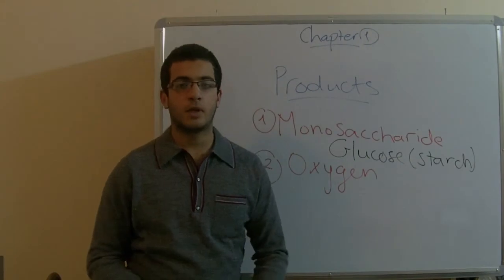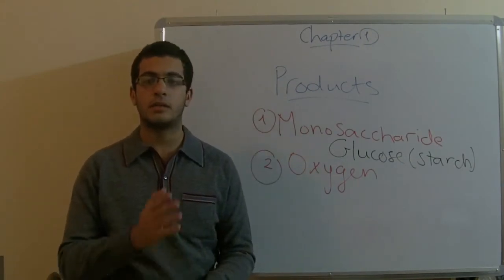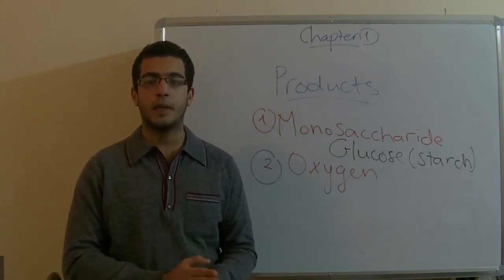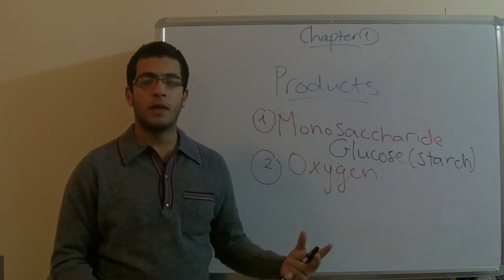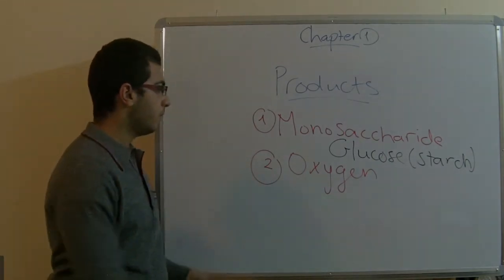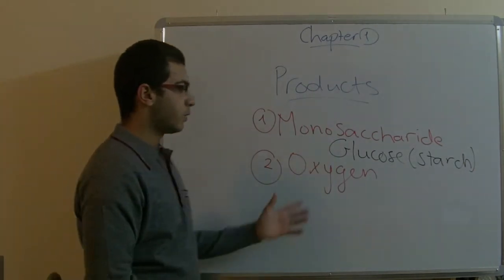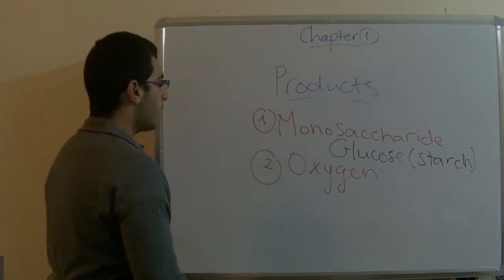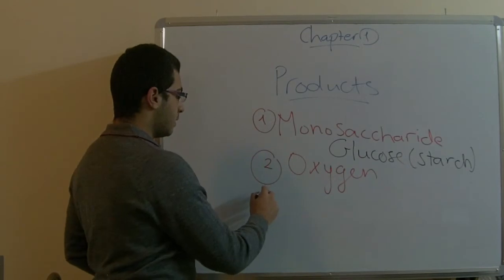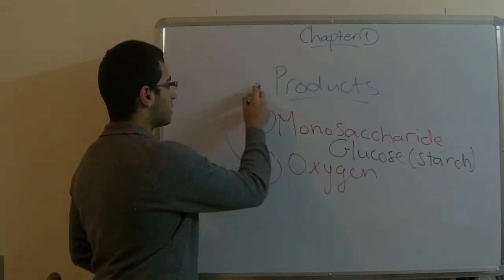And the oxygen evolves because we said in photosynthesis the water molecule is split to remove the hydrogen from the water molecule. And of course, the oxygen remains. So it goes outwards by means of the products of photosynthesis.